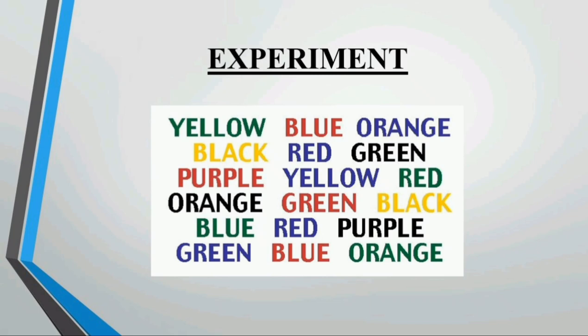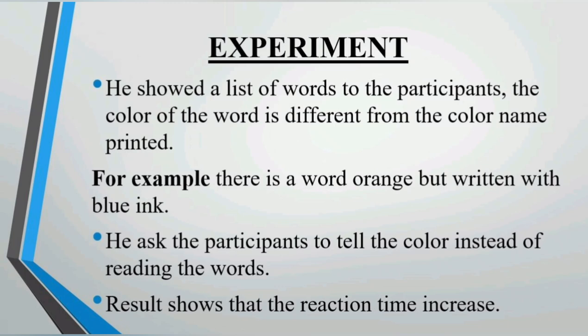John Ridley Stroop explained this in his experiment. It was simple. He had a list of words where the color name was written and the color ink was printed. They were both different. Participants had to read out the color of words rather than the name of words. What was the result of this? It was that reaction time increased.